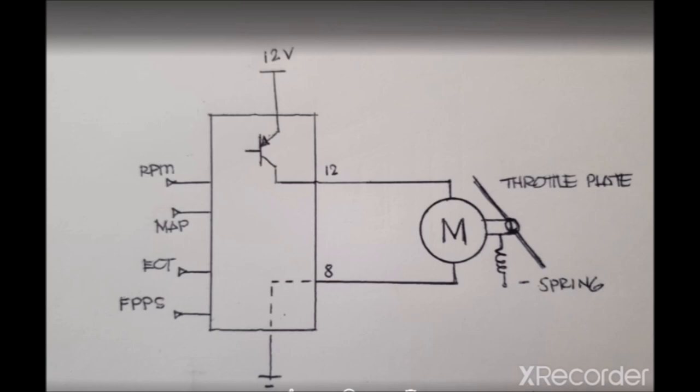So this is a graphical representation of the motor control for the throttle. And this is what I think is happening here, or at least how this is being controlled.